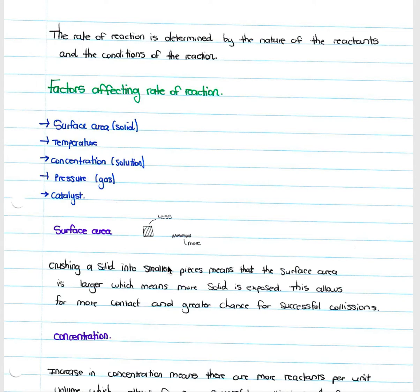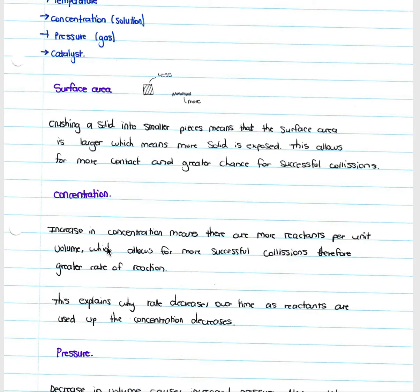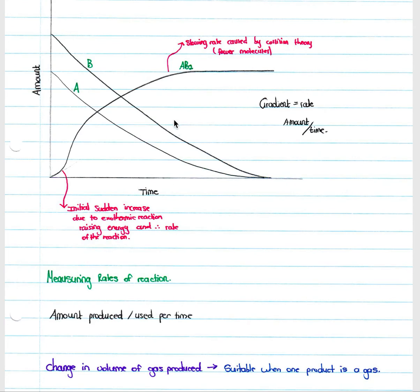Increasing surface area by crushing a solid into small pieces exposes more of the solid, allowing more contact and a greater chance of successful collisions, thus increasing the reaction rate. Increasing concentration means more reactants per unit volume, more successful collisions, and a greater rate. Decreasing concentration reduces successful collisions and decreases the rate — this also explains why the rate decreases over time as reactants are used up.